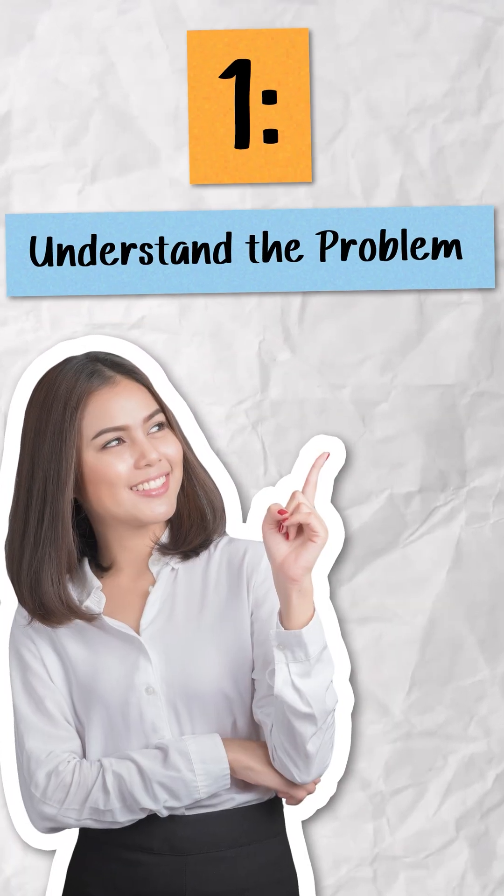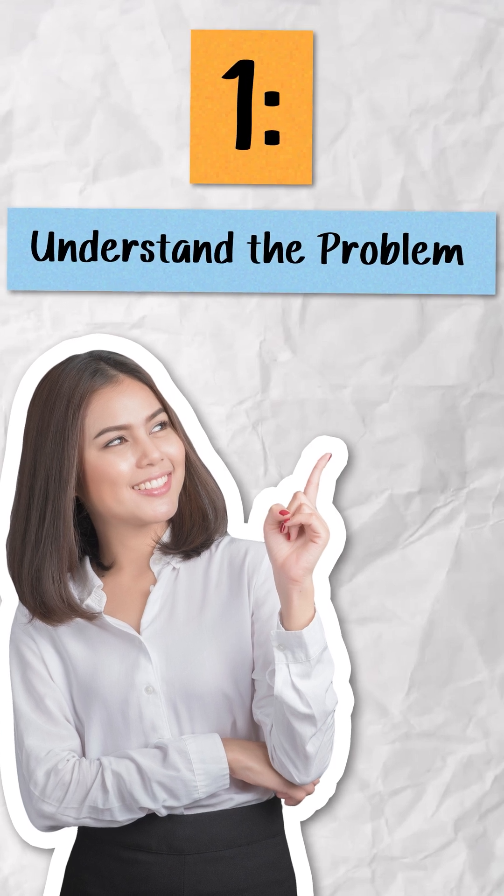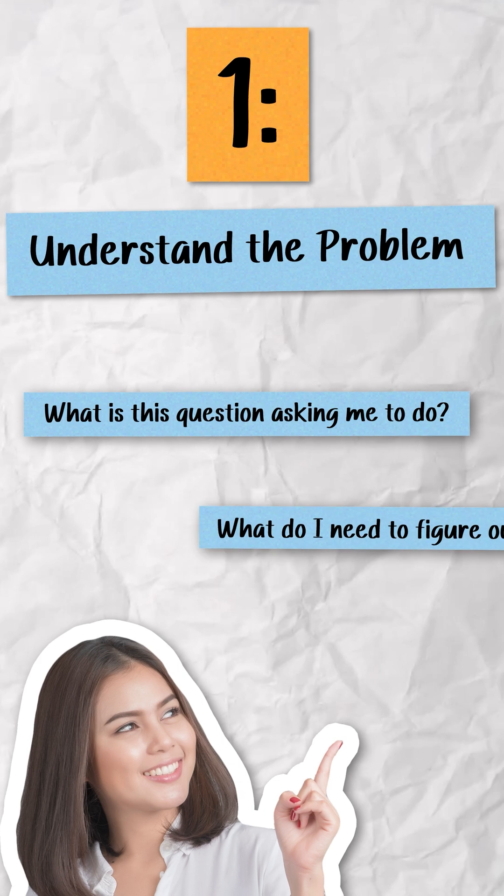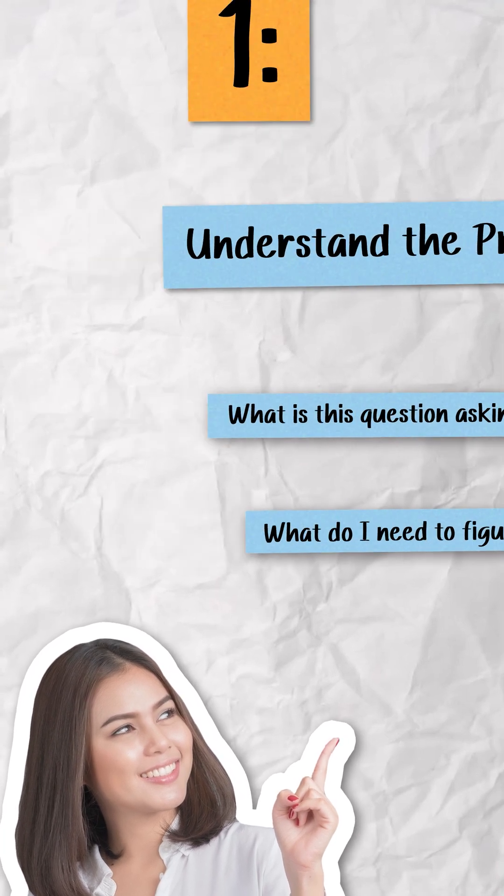Step 1. Tell them to slow down and really understand the problem. Encourage them to really understand what the question is asking them to do and what they need to figure out. If they know what they need to do, great! On to the next step.